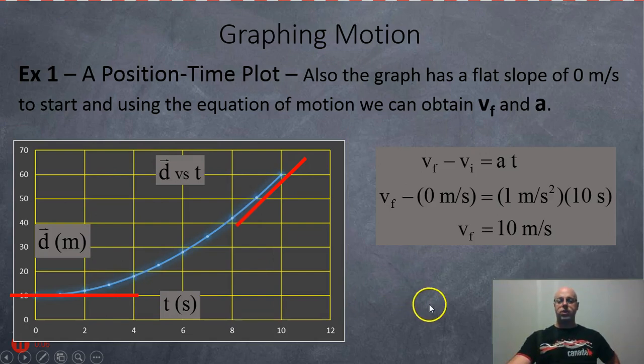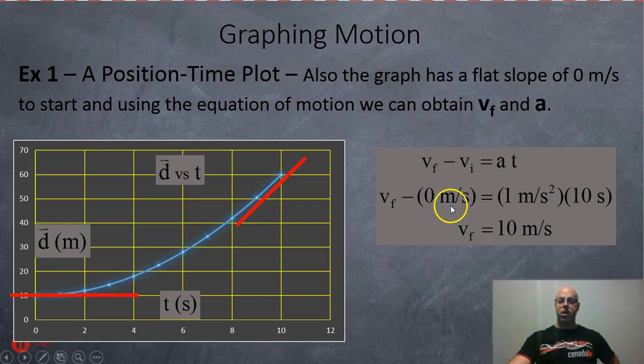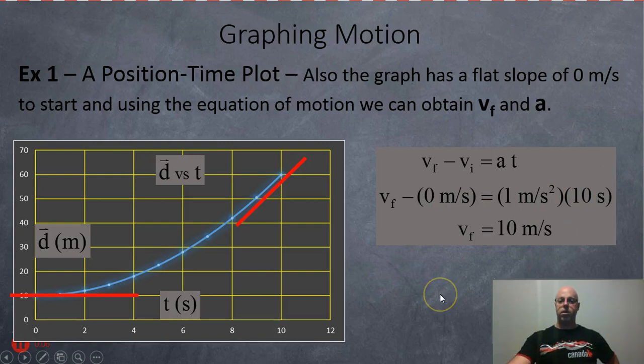Now that we've got the acceleration, we can find the final velocity. VF minus zero equals 1 times 10, so the final velocity is 10 meters per second.